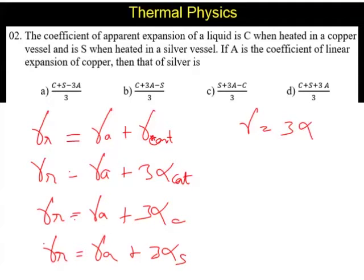In the problem, it has been given the apparent expansion in the case of a copper vessel is C. So this equation becomes the real expansion is equal to C plus 3, alpha C is given as A, coefficient of the expansion of copper is given as A. So alpha R equal to C plus 3A.